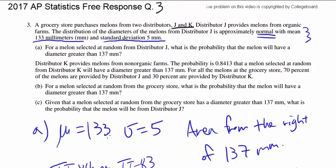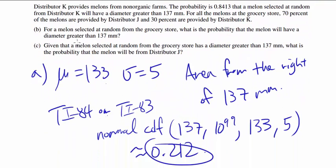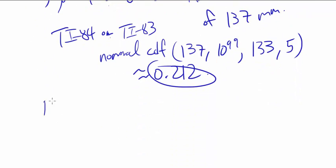Now let's look at B. Distributor K provides melons from two organic farms. The probability is 0.8413 that a melon selected at random from distributor K will have diameter more than 137. Let's write that down.